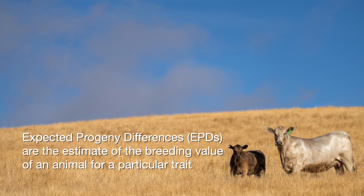Expected progeny differences, or EPDs, are an estimate of the breeding value of an animal for a particular trait. The convenient thing about EPDs is that they are reported in the units that that particular trait gets measured in. These things are helpful to us to compare to other animals in that registry or in that same breed to think about their genetic potential as a parent.